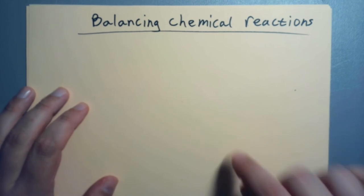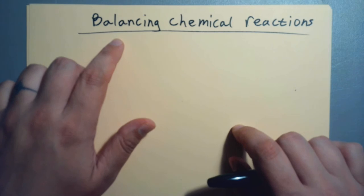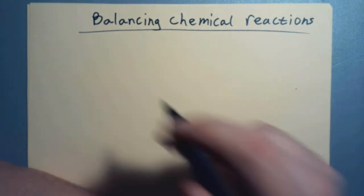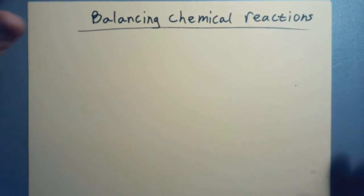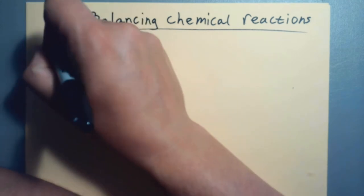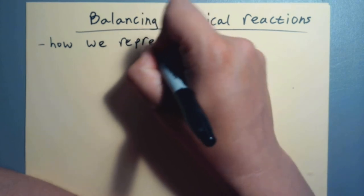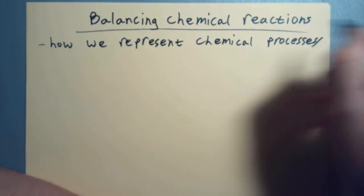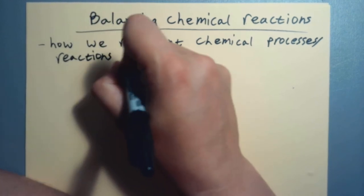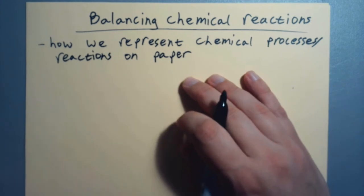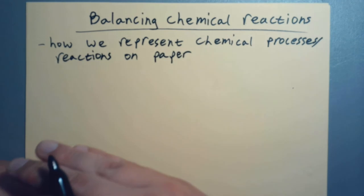You guys have seen chemical equations before, but we're going to really break them down here and talk about how to balance them, which is something we haven't talked about before. I've been pretty good about showing balanced chemical equations throughout, but after this you have the ability to go back and double-check me. This is how we represent chemical processes on paper or chemical reactions. Most people say this is their favorite thing in this class, balancing chemical equations, because you just count stuff up on one side, count stuff up on the other, and make sure it matches up.